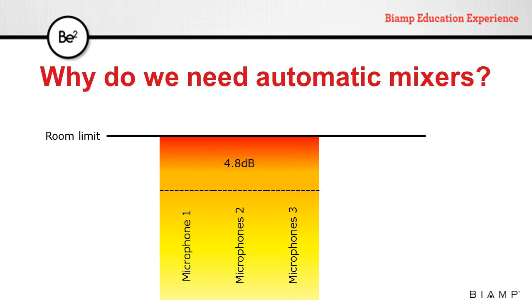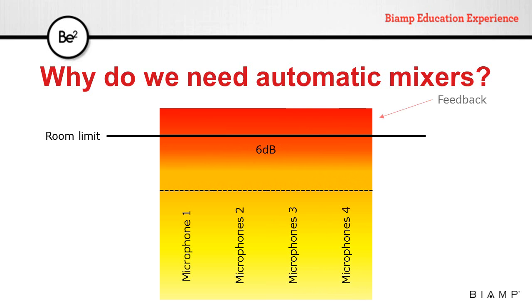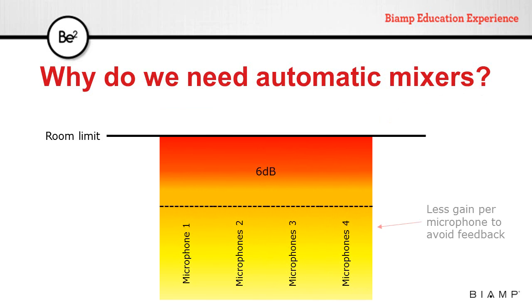If we add a third microphone, we go a bit higher. If we go to four microphones, we add 6 dB total — duplicating again from 2 to 4, so we gain 3 dB more. If this increase puts us above the room limit, we'll get feedback. The solution is to apply less gain to each microphone so that when we sum them together, we don't reach the room limit.